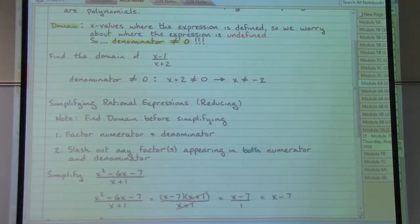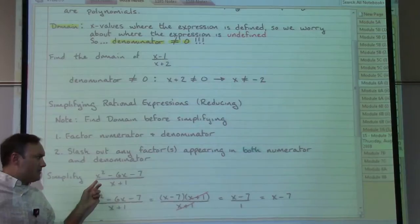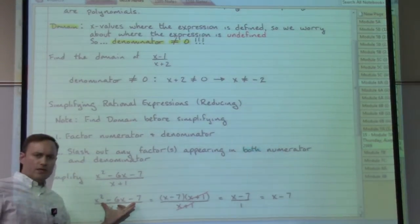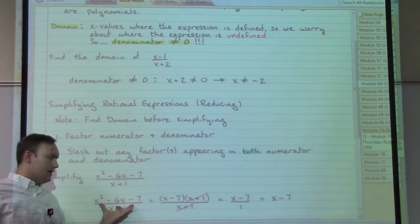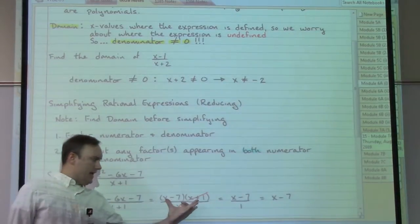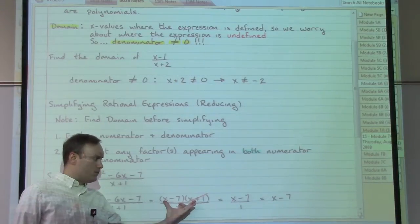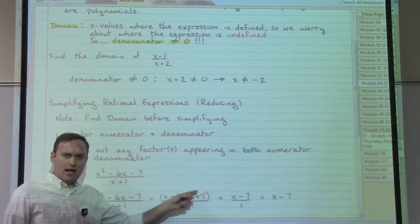For instance, here in this example, x squared minus six x minus seven over x plus one. With our factoring checklist, we work through factoring that numerator. Using the AC method, we get x minus seven times x plus one.